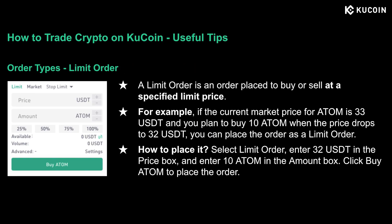If you're not clear about the order types, I'll briefly explain them here. What is a limit order? A limit order is an order placed to buy or sell at a specified limit price. For example, if the current market price for ATOM is 33 USDT and you plan to buy 10 ATOM when the price drops to 32 USDT, you can place the order as a limit order. Just select limit order, enter 32 USDT in the price box, and enter 10 ATOM in the amount box, then click buy ATOM. In other words, it aims to execute your buy order at a lower price and sell at a higher price.